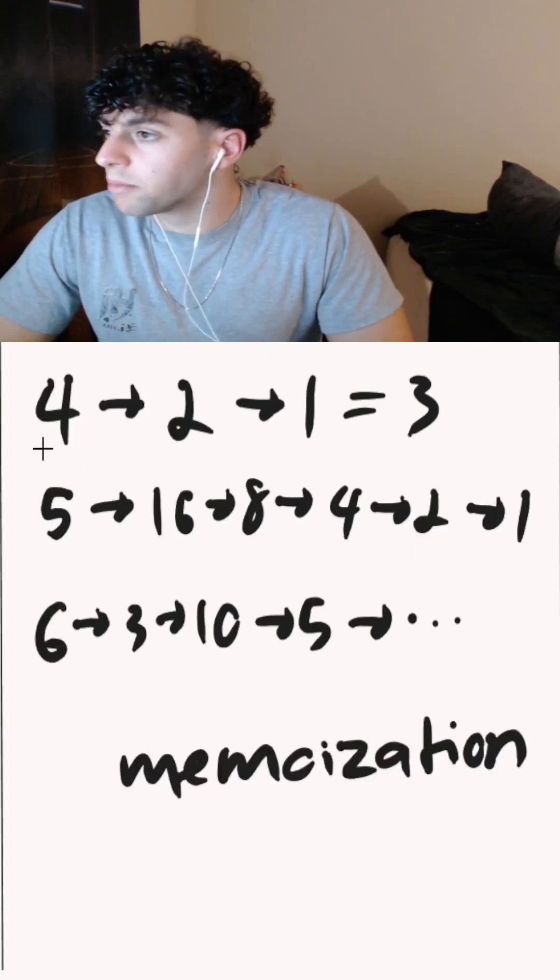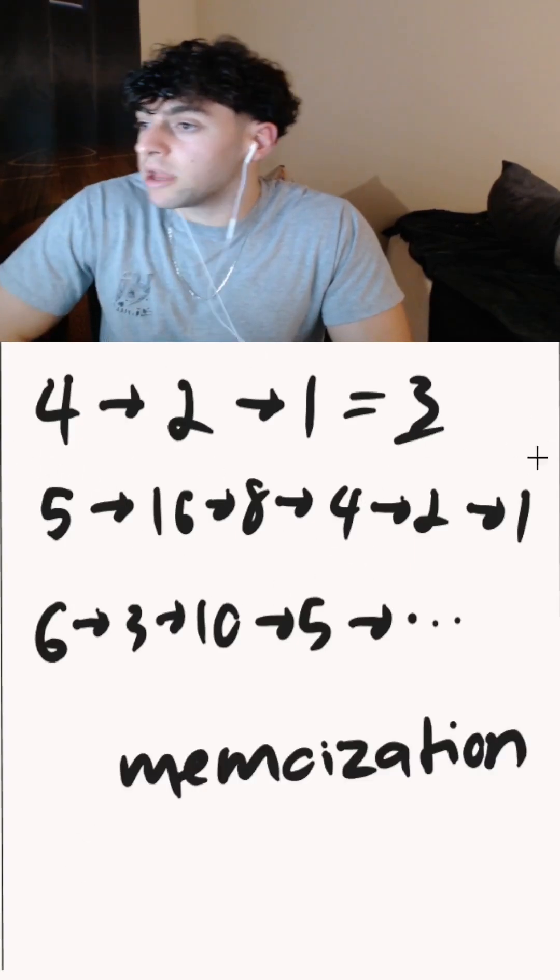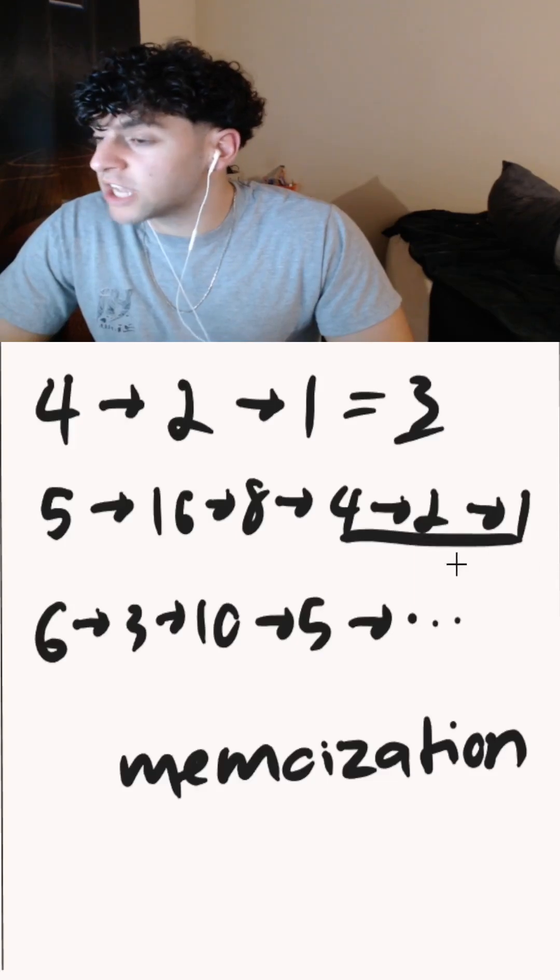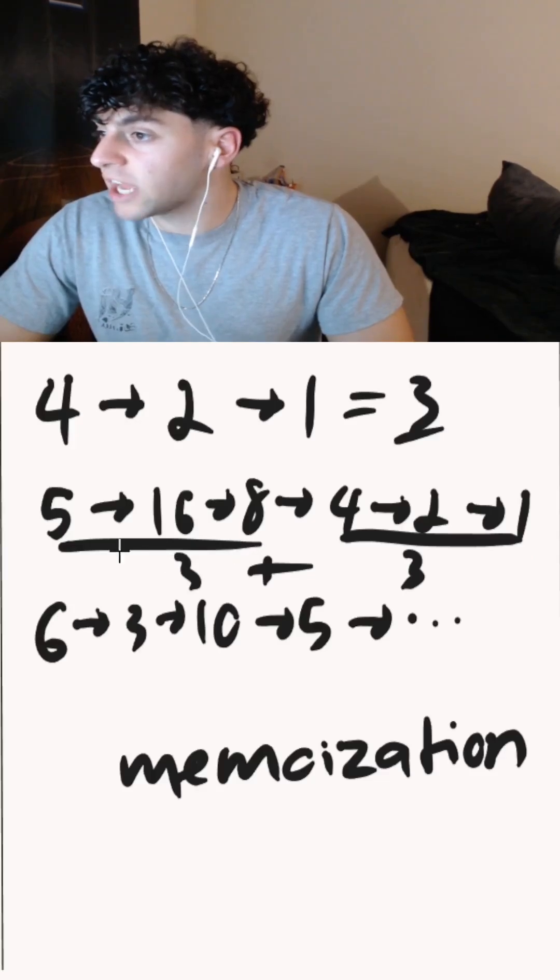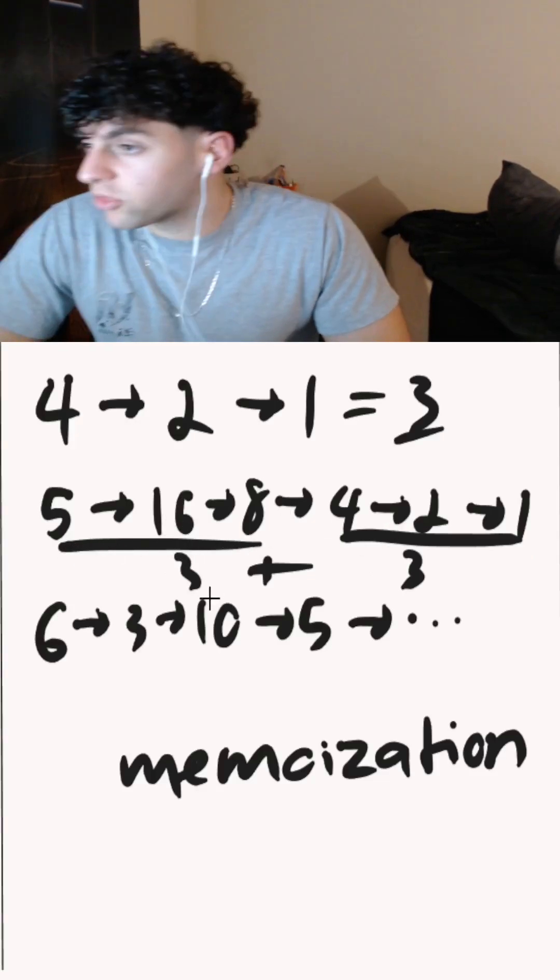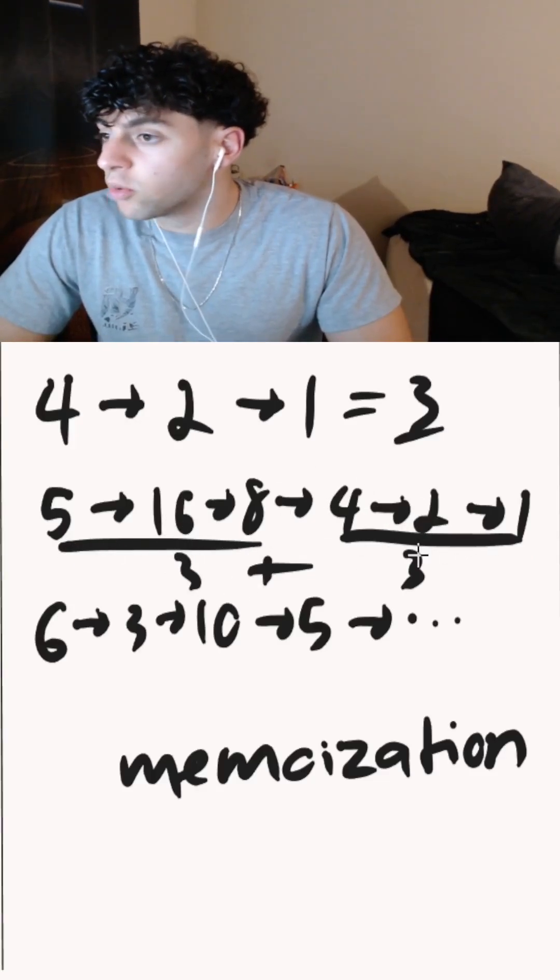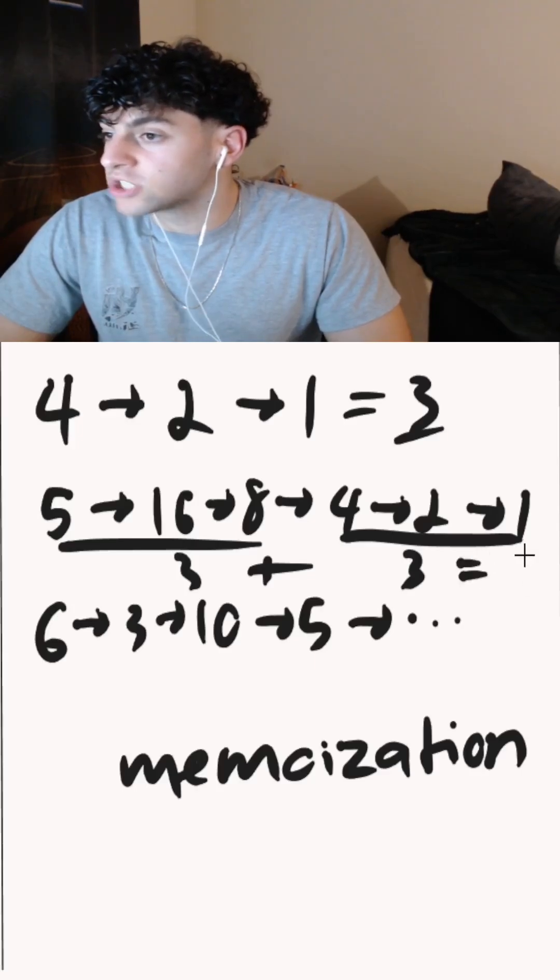When we compute the chain length for a number, say 4, we can store the result in memory. And when we run into this computation again, we can just retrieve our answer and add it to our current chain length. In this case, when computing the chain length for 5, our current chain length would be 3. And when we get to the computation of 4, we could just add 3 again to get a total chain length of 6.